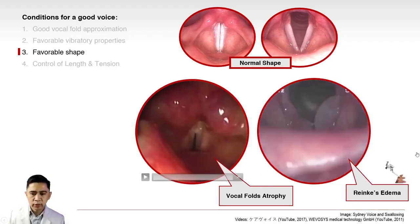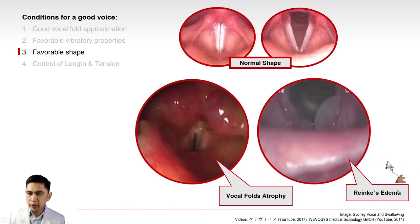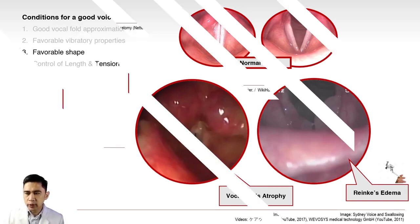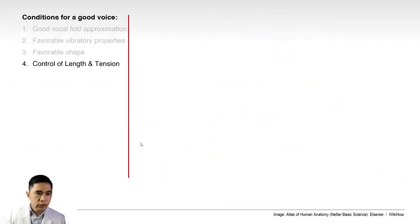Vocal fold atrophy with bowing is usually seen in vocal fold paralysis or in elderly patients. Another shape abnormality is Reinke's edema — the vocal folds appear very bloated and polypoid, like grapes. This is usually caused by chronic smoking, expected in patients who have smoked for 30 or more years.